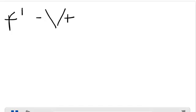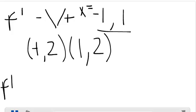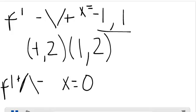Next, we want to find the local maximum and minimums. A local minimum is when f prime is changing from a negative slope to a positive slope. This happens at the points negative 1 and 1. You plug both of these numbers back into the original function to get the points (-1, 2) and (1, 2). Local maximums occur when f prime changes from a positive slope to a negative slope. This happens at x = 0. Plugging x = 0 back into the original function gives the point (0, 3).